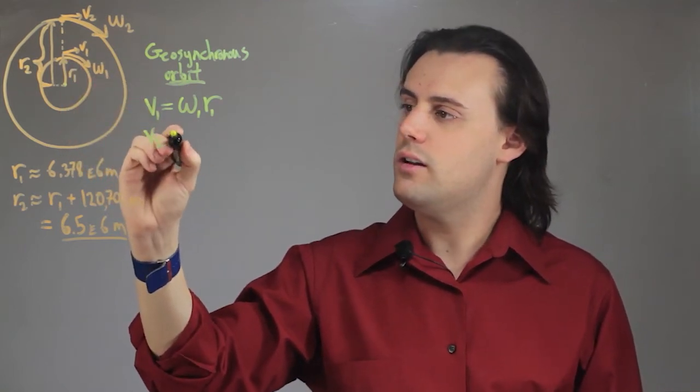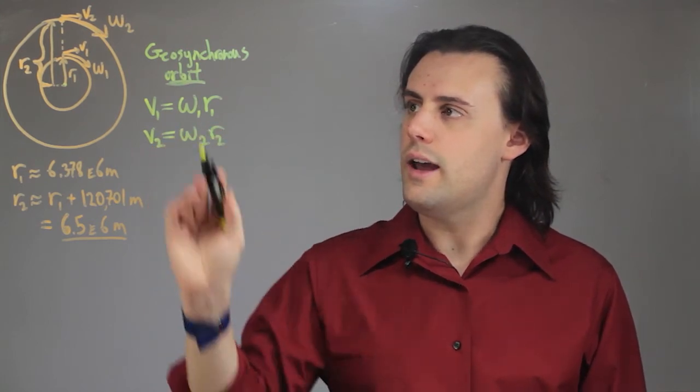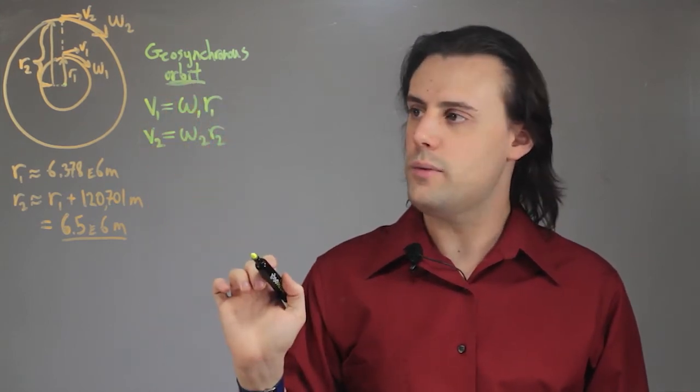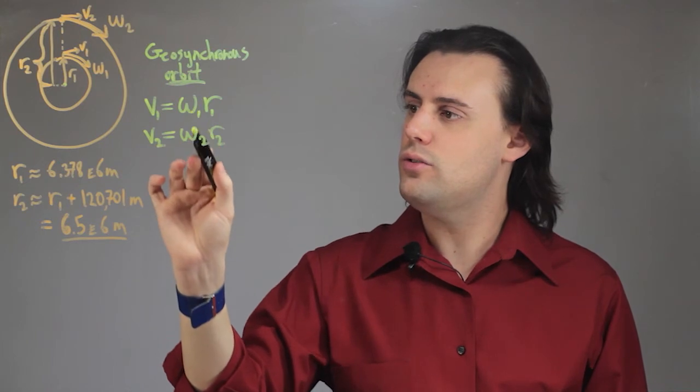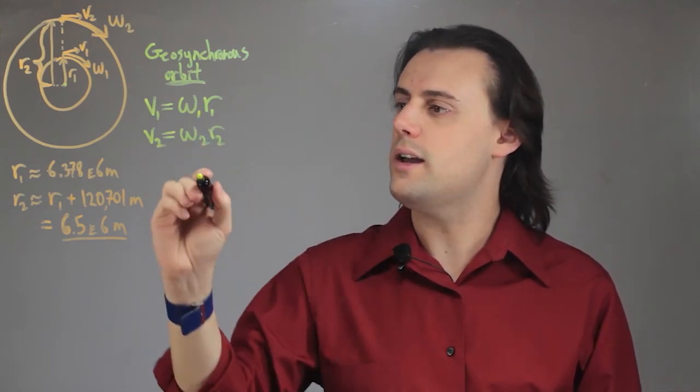Likewise, we'll have v2 is equal to omega 2 times r2. Now, if we have geosynchronous orbit, that means that these two omegas will be equal to just omega.